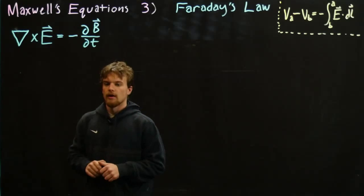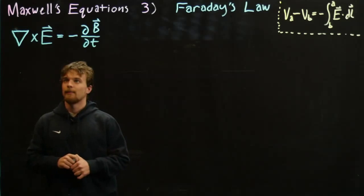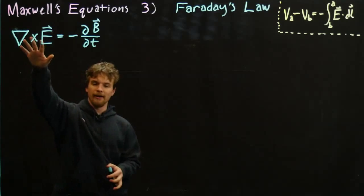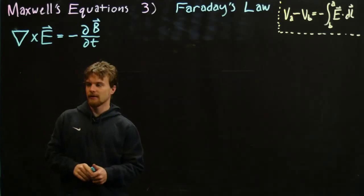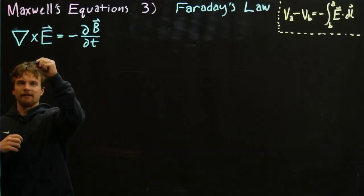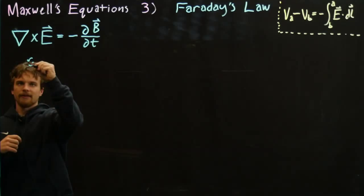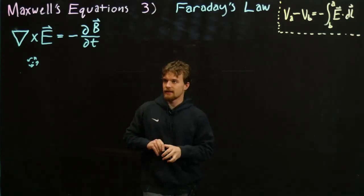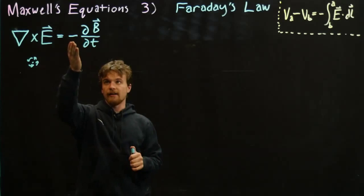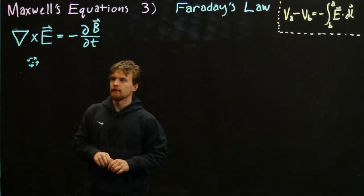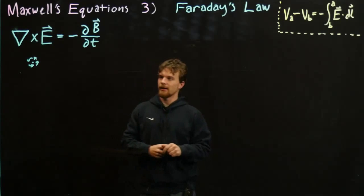In calculus terms, this operator here is the curl of the electric field — it's the tendency of the electric field to curl around at some point in space, and it's a scalar value. This equals the negative of the time derivative of the magnetic field at that point. So this is the differential form, and as usual it's a little bit hard to visualize.